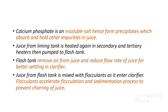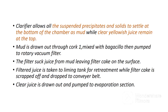Calcium phosphate is an insoluble salt, hence it forms precipitates which absorb and hold other impurities in the juice. Juice from the liming tank is heated again in secondary and tertiary heaters, then pumped to the flash tank. The flash tank removes air from the juice and reduces the flow rate for better settling in the clarifier. Juice from the flash tank is mixed with flocculants as it enters the clarifier.